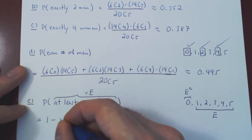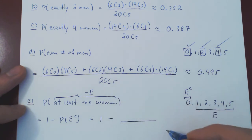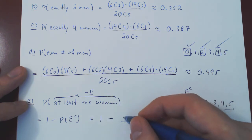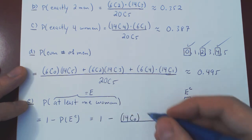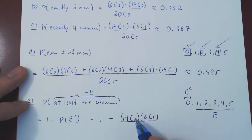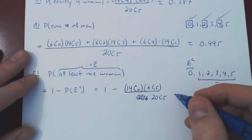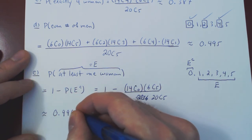P(E) = 1 minus P(E complement). The complement event is 0 women. So out of the 14 available women, we choose 0, and out of the 6 available men, we choose 5 — giving 14C0 × 6C5 committees with 0 women. Divided by the total, 20 choose 5. So P(E) = 1 minus (14C0 × 6C5) / 20C5, which gives approximately 0.999613.